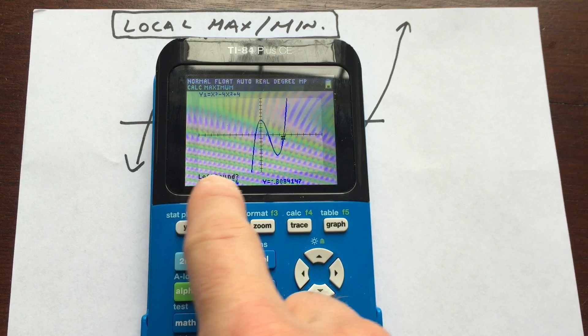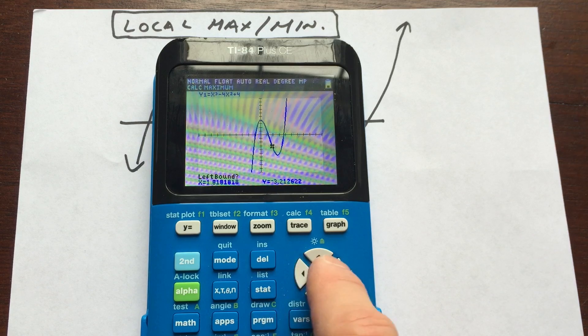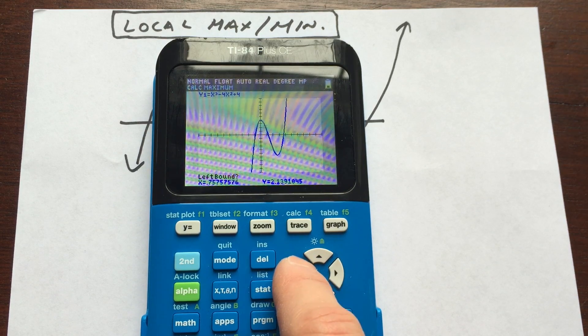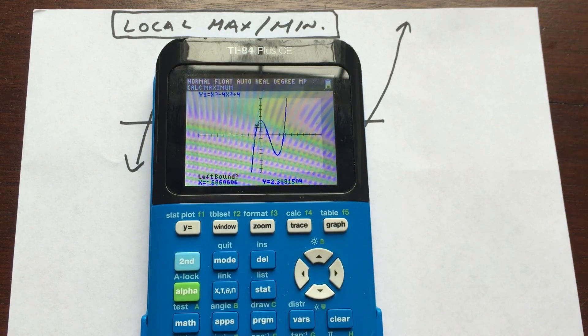Now you see how it says left bound? What we want to do is we want to arrow just a little bit, and you can see I'm using the left and right arrow keys. I want to arrow just a little bit to the left of that high point. So it says left bound. I'm going to press enter.